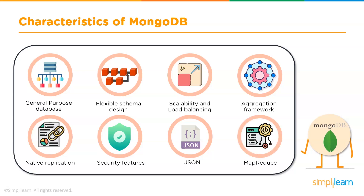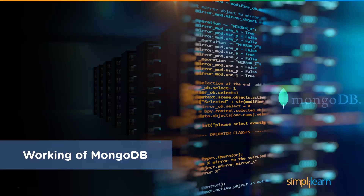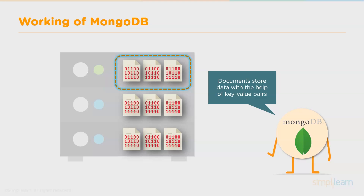Lastly, map reduce is an excellent tool to build data pipelines, and MongoDB uses map reduce readily. Now let's look at the working of MongoDB. Data is stored in documents with the help of key-value pairs, and the data is stored in the BSON format at the backend.